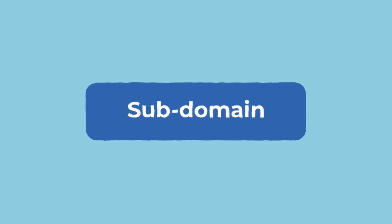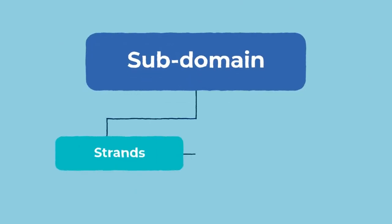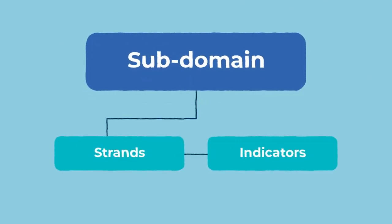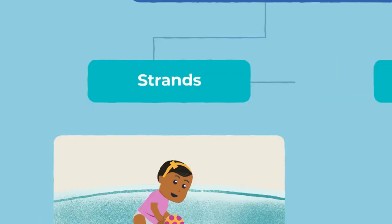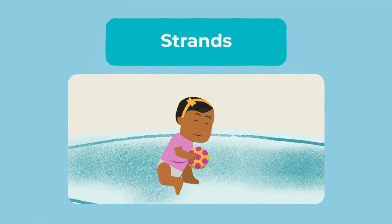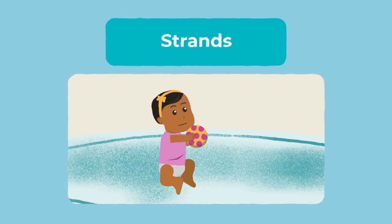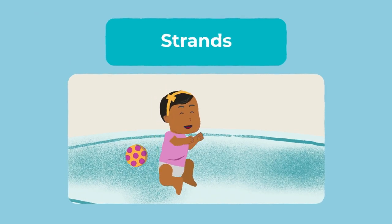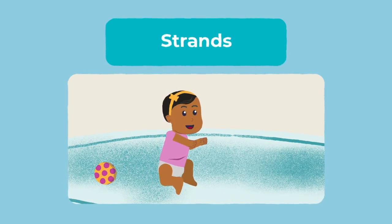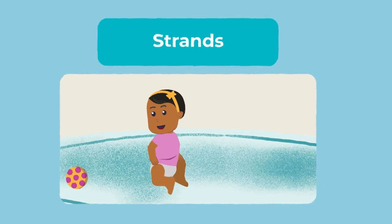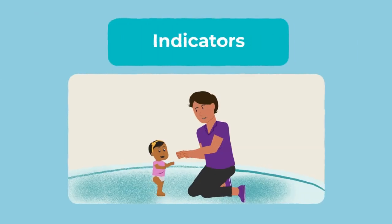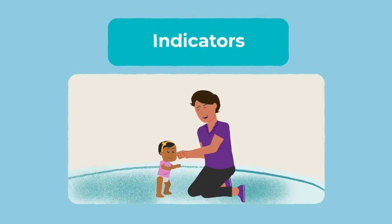Within each subdomain there are strands and indicators. Strands describe the capabilities that change as children learn and develop, and indicators describe the progress you may observe.